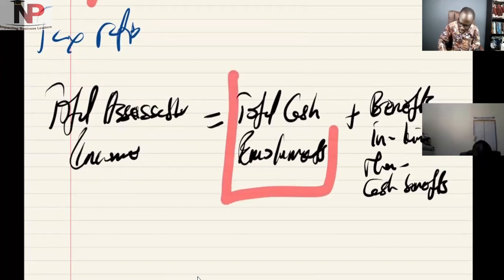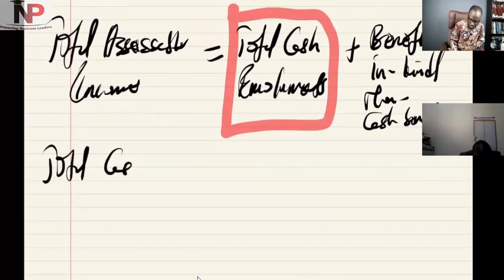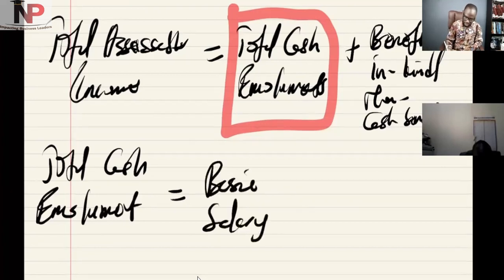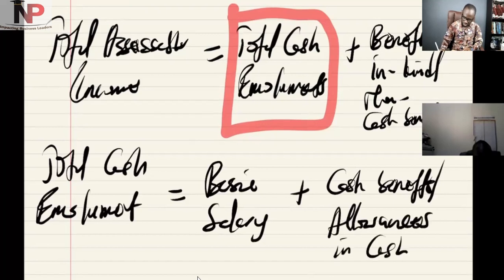When we say total cash emoluments, what exactly do we mean? Total cash emoluments is simply going to be equal to the basic salary of the individual in question, plus cash benefits received or allowances in cash. That is total cash benefits.